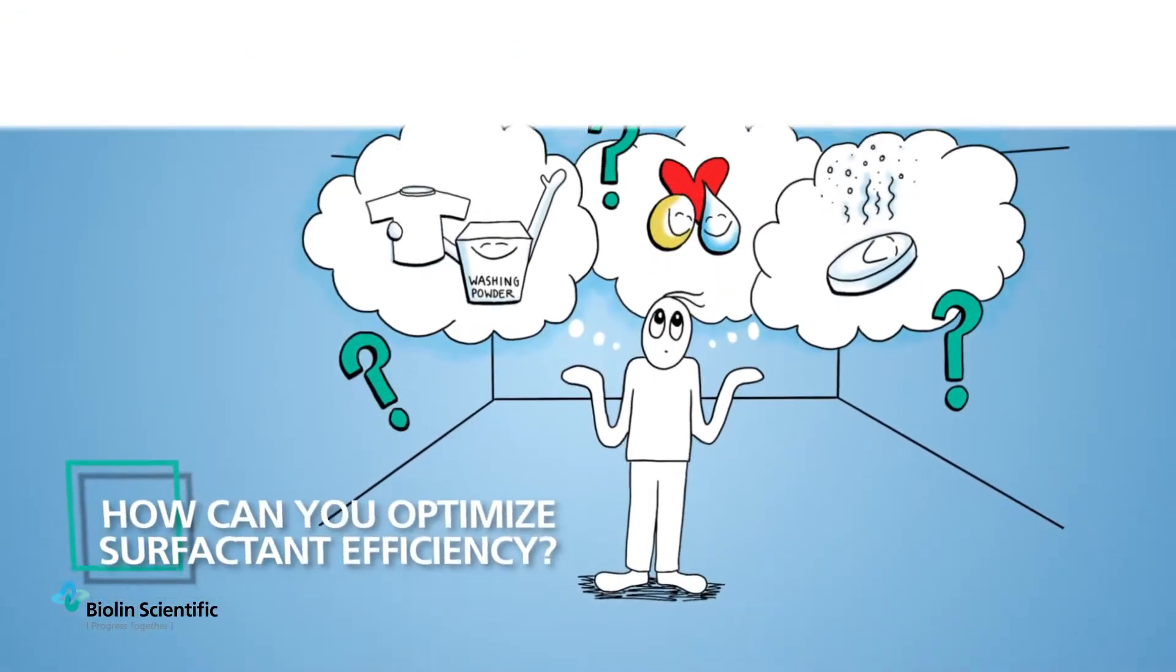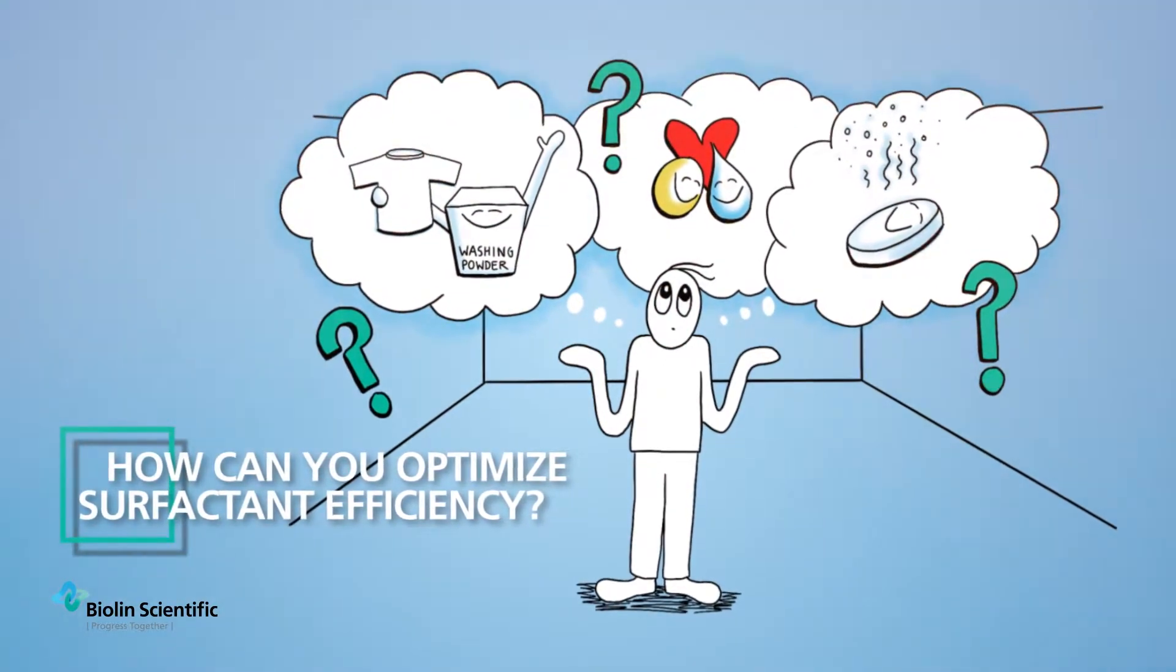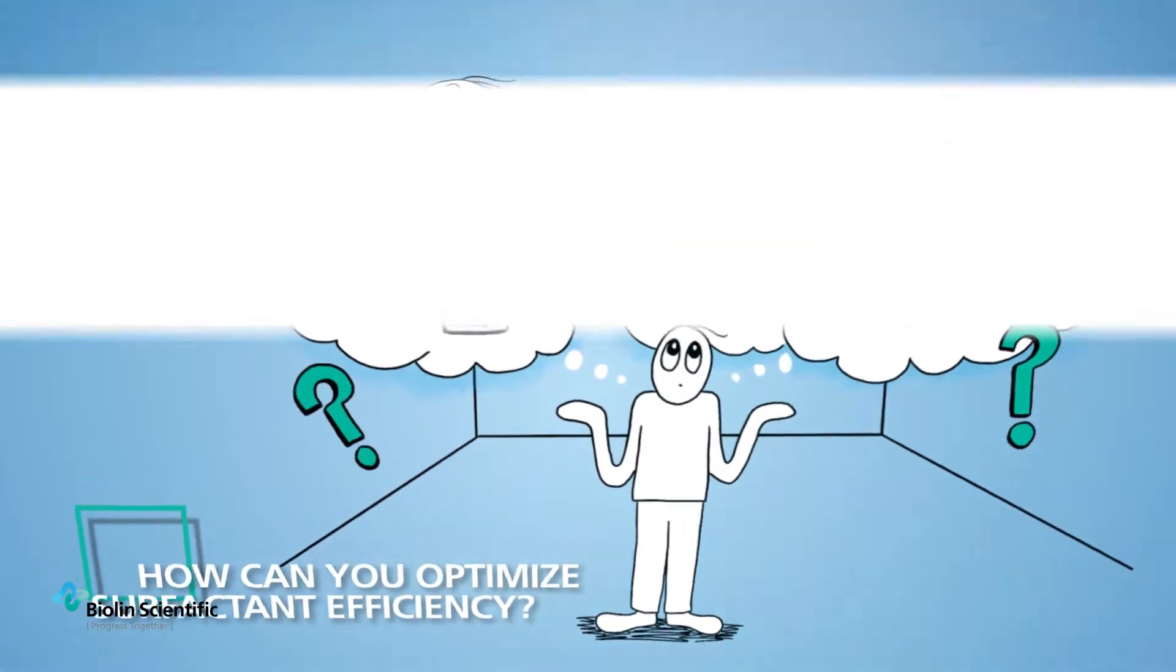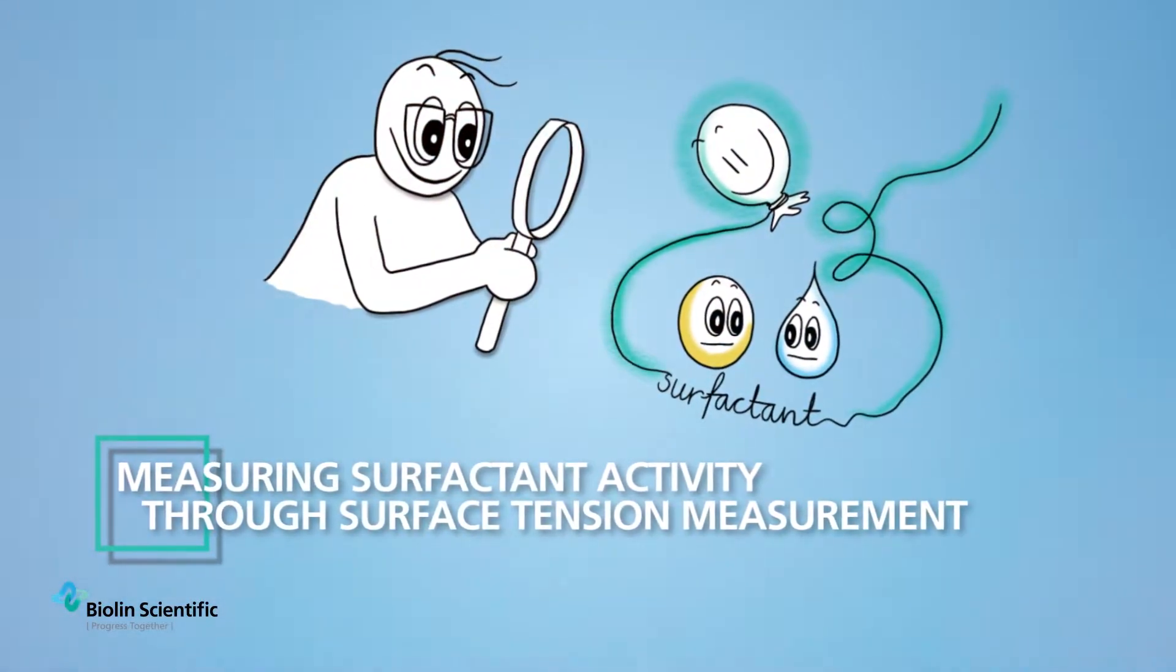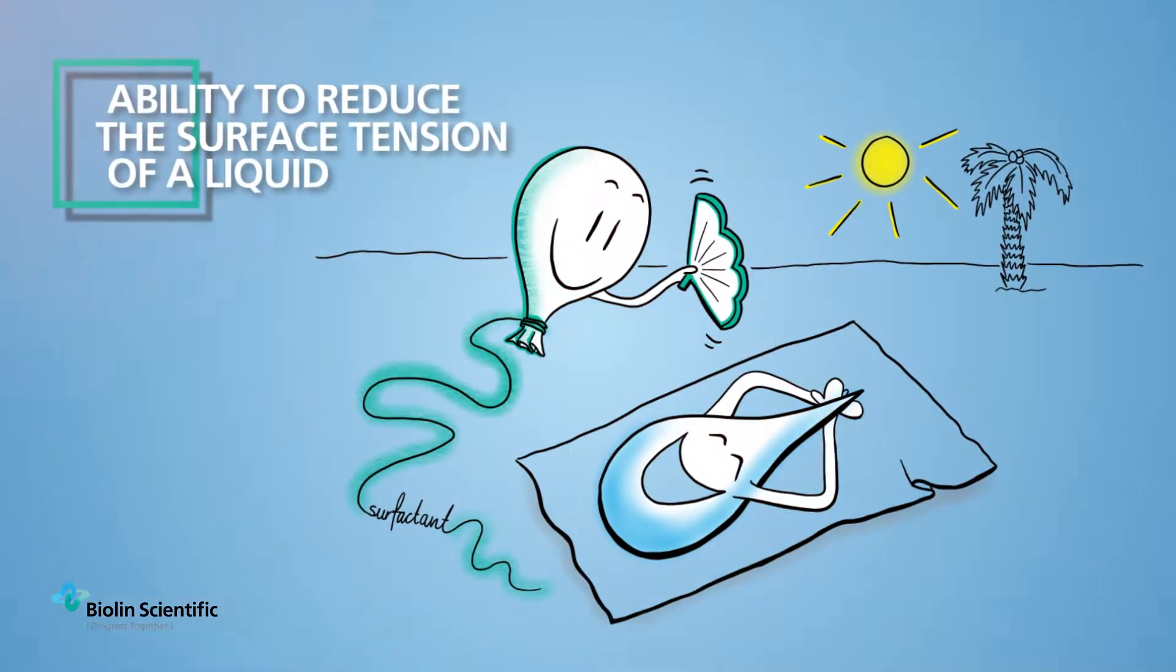So if you're working with surfactants, for example in detergent, paint, or the pharmaceutical field, how can you optimize their efficiency? The common scientific way of measuring surfactant activity is through surface tension measurement.